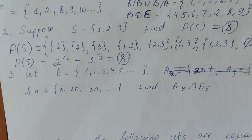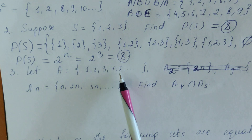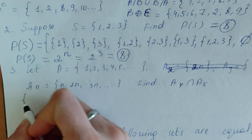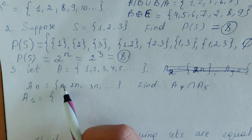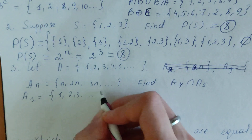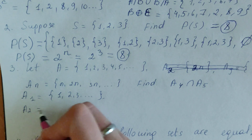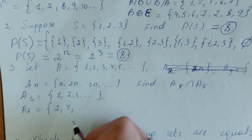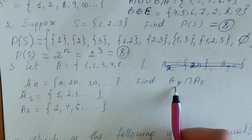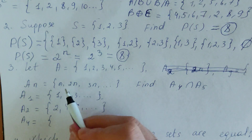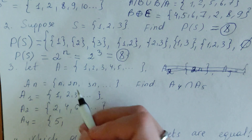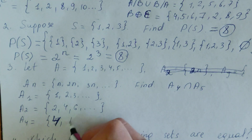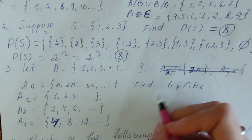Here is the third question. Let A_n be the set {n, 2n, 3n, ...}. For example, A1 — replacing n by 1 — gives {1, 2, 3, ...}. A2 gives {2, 4, 6, ...}. What about A4? A4 is equal to {4, 8, 12, ...} — replacing n by 4 gives 4, 2×4=8, 3×4=12, and so on.